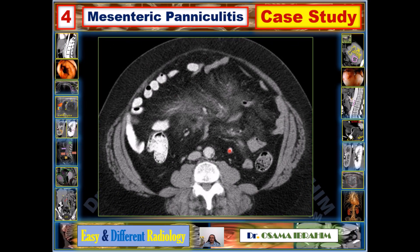In a CT abdomen with axial images showing fat stranding in the mesentery, this represents mesenteric paniculitis. You can notice the hyperattenuation of fat in the pathological regions, as well as a hypoattenuating halo sign surrounding it, which helps distinguish it from other mesenteric masses like lymphoma or mesothelioma. Mesenteric paniculitis is characterized by this halo sign and hyperattenuating fat inside.